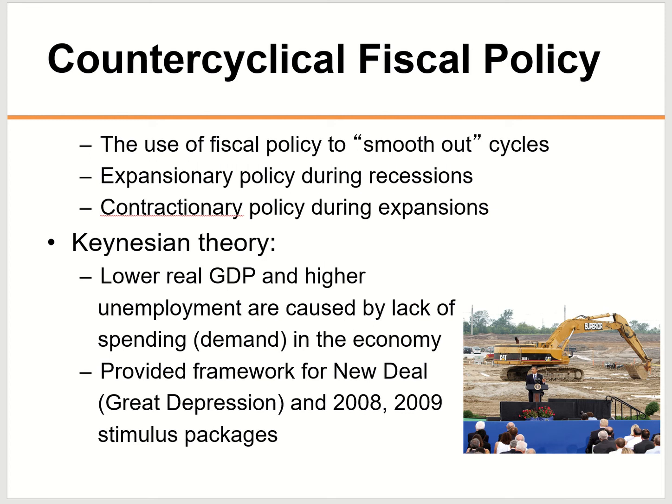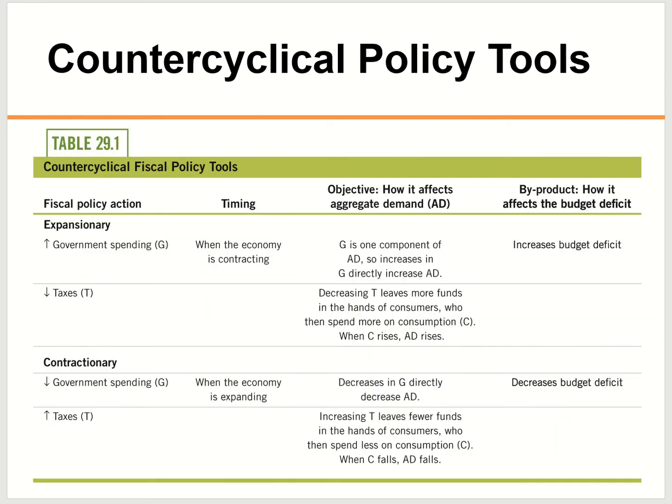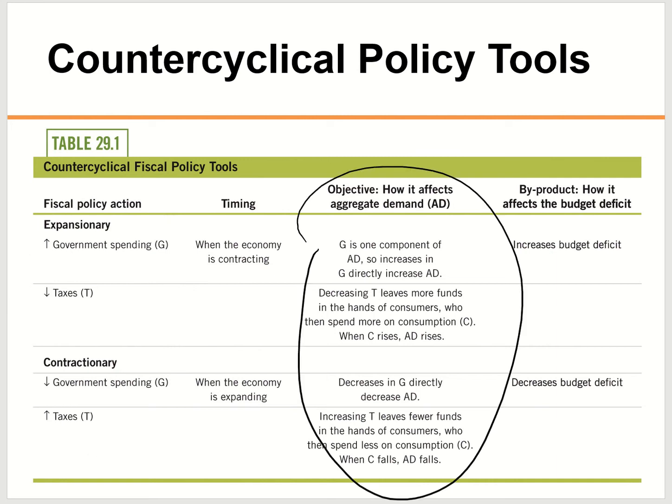The Keynesian theory is the idea of this counter-cyclical fiscal policy: that our government should use government spending and tax to offset the economic conditions currently in the economy. If the economy slows down, we stimulate it; if the economy gets too hot, we cool it down. Remember: expansionary is increased government spending or lower taxes, and contractionary is lower government spending or increased taxes. Also note that expansionary fiscal policy will cause the deficit to increase, and contractionary fiscal policy will cause the deficit to decrease.